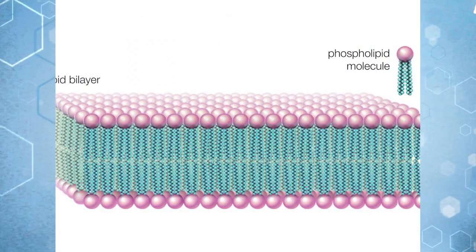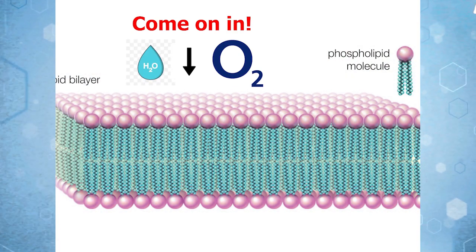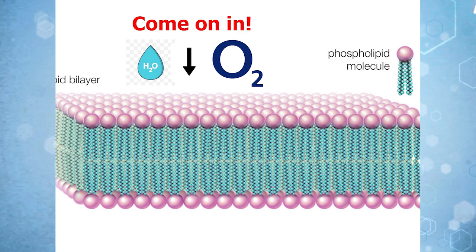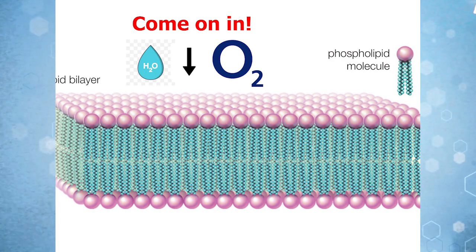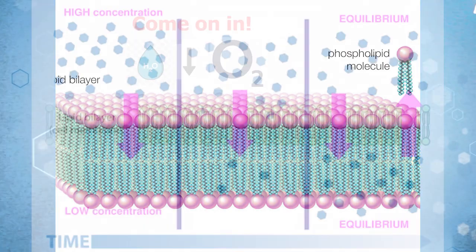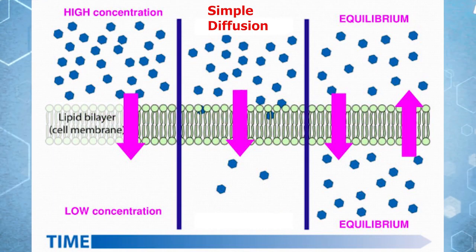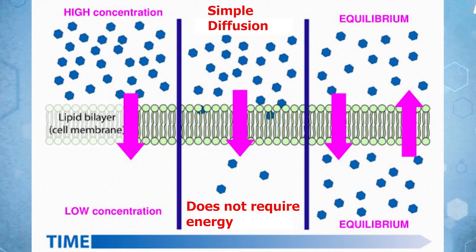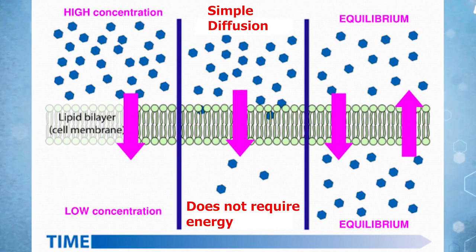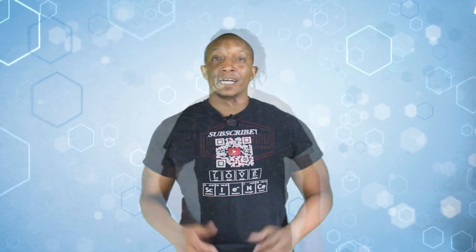Phospholipids can also allow water and other non-polar molecules to pass through into or out of the cell. This is known as simple diffusion because it does not require energy, and the water or molecules are moving from a high concentration to a low concentration.